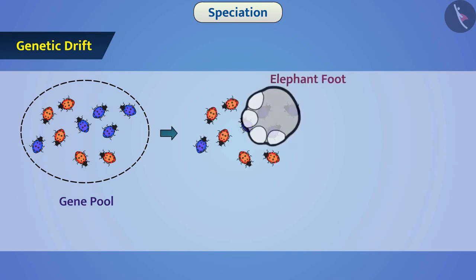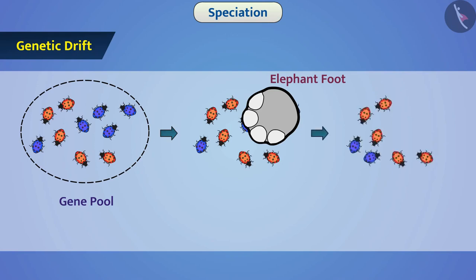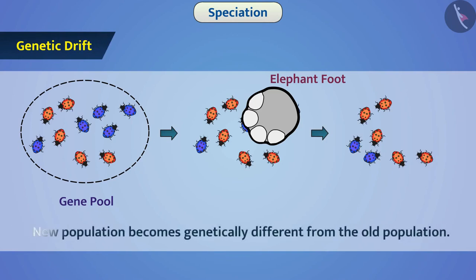Due to events like natural calamity, there are changes in the frequency of alleles which happen solely by chance. We call it genetic drift. Due to this, the new population becomes genetically different from the old population. Often, the evolution of the new population takes place such that there is development of new species.